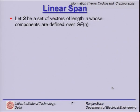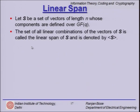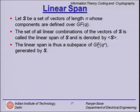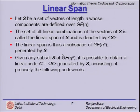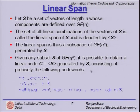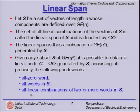Let us define something called the linear span. Let S be a set of vectors of length n whose components are defined over GF(Q). The set of all linear combinations of the vectors of S is called the linear span of S. The linear span is a subspace of GF(Q)^n generated by S, and it is possible to obtain a linear code C as the span generated by S.